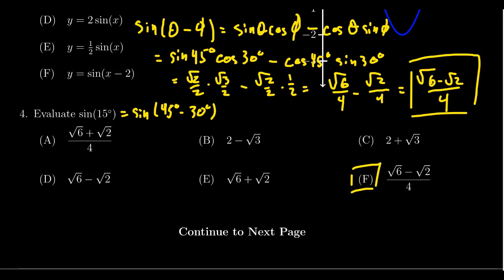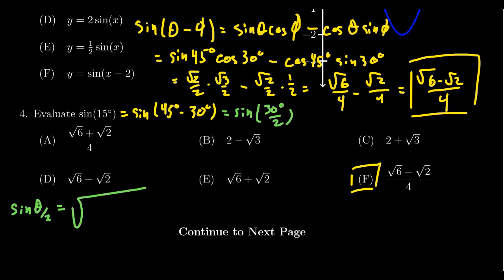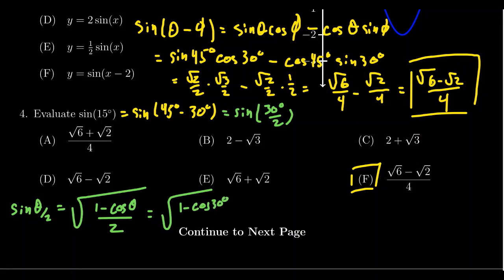You could also think of 15 degrees using the half-angle identity — that is, sine of 15 degrees is the same as sine of 30 degrees divided by 2. The half-angle identity for sine is: sine of theta over 2 equals the square root of (1 minus cosine of theta) all over 2. We evaluate this at the square root of (1 minus cosine of 30 degrees) all over 2, and cosine of 30 degrees is root 3 over 2.